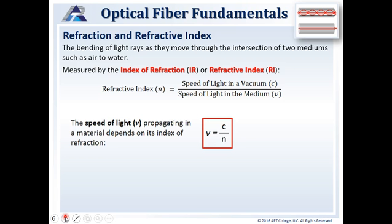Refraction and refractive index: the bending of light rays that move through the intersection of two mediums, such as air to water, is refraction. This is measured by the index of refraction or refractive index. To determine your refractive index, you take the speed of light in a vacuum and divide it by the speed of light in that medium. The speed of light in a vacuum is 300,000 kilometers per second, or 300 million meters per second, where the speed of light in air is about the same.